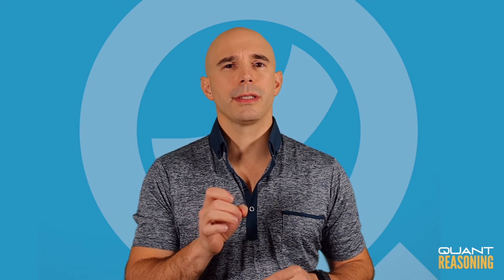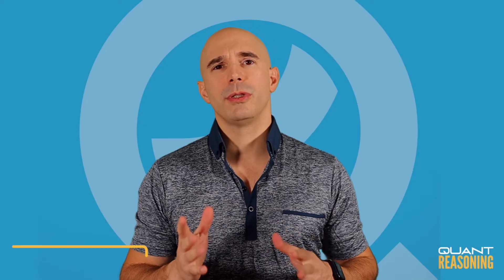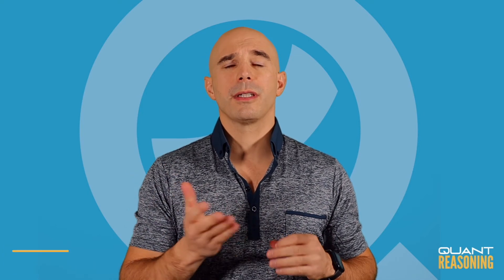Even what the question is asking for is a little bit tricky, because it's not asking for one particular cell in our diagram. It's asking for the sum of two cells: dogs but no cats, and cats but no dogs. We're looking for the sum of those two diagonal cells.